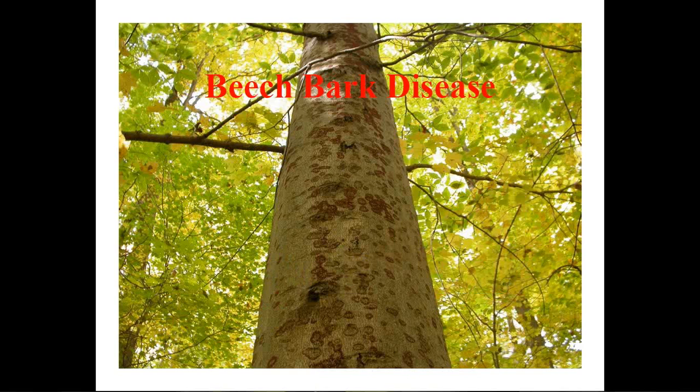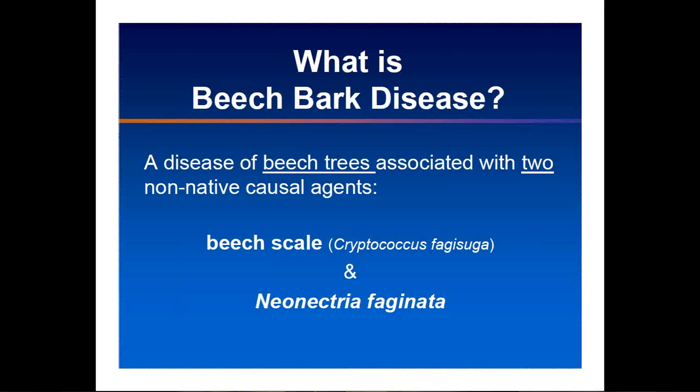Moving on, I want to start to address beech bark disease. What is beech bark disease? It's an invasive pathogen associated with an invasive insect. We need a scale insect, which is invasive, and a fungus, which we call Neonectria faginata. We combine both the scale and the disease together and call it beech bark disease — they work together in a complex. To have beech bark disease, we also need beech trees. It's only beech trees that are infected — both the native beech and the European beech that's imported.